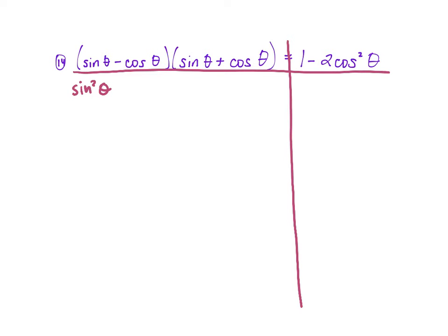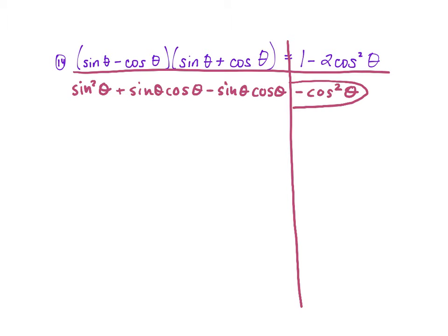Sine times cosine gives us a positive sine θ cosine θ. Negative cosine times sine gives a negative sine θ cosine θ, and negative cosine times positive cosine gives negative cosine² θ. The two middle terms cancel, so we're left with sine² θ minus cosine² θ.